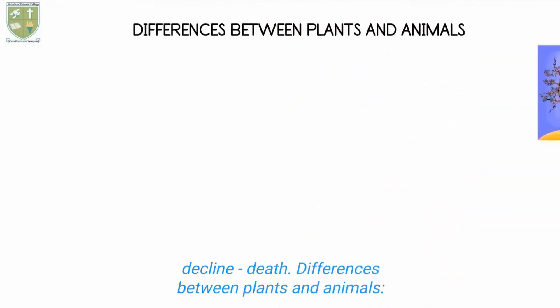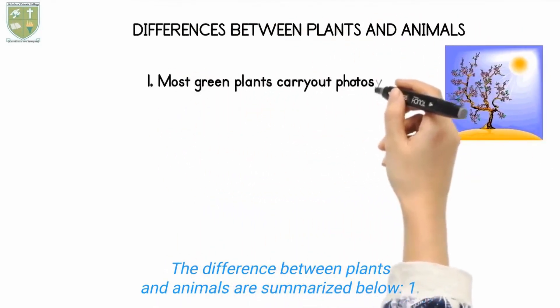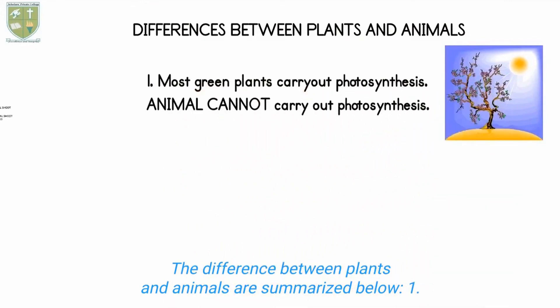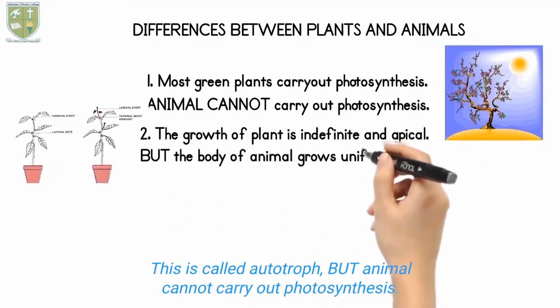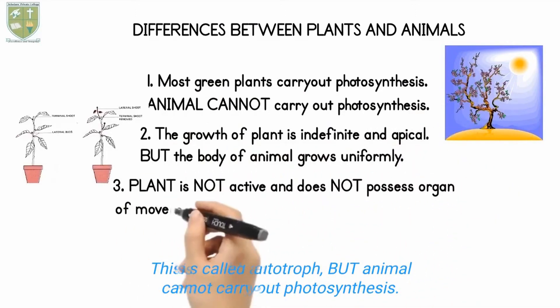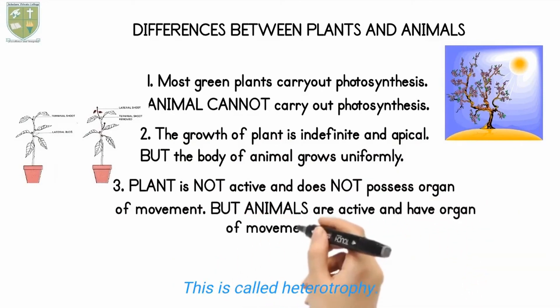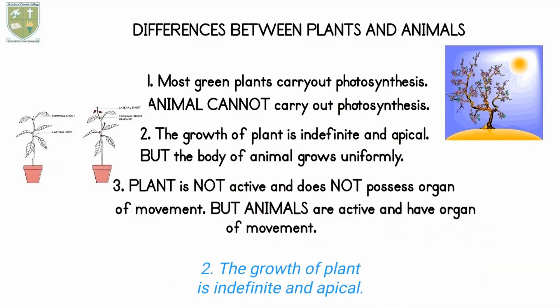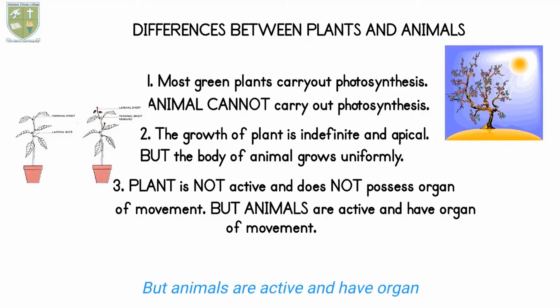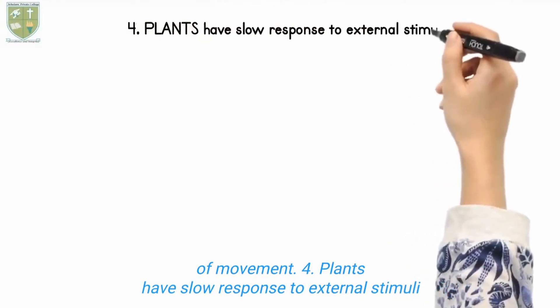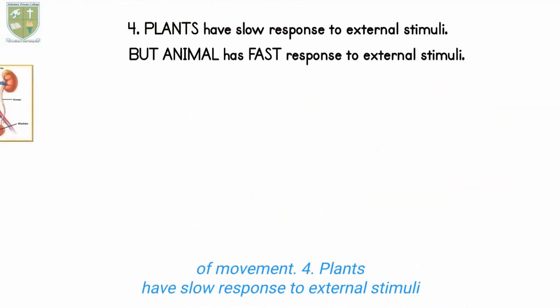Differences between plants and animals. 1. Most green plants carry out photosynthesis — this is called autotroph. 2. The growth of plants is indefinite and apical, but the body of animals grows uniformly. 3. Plants are not active and do not possess organs of movement, but animals are active and have organs of movement. 4. Plants have slow response to external stimuli.